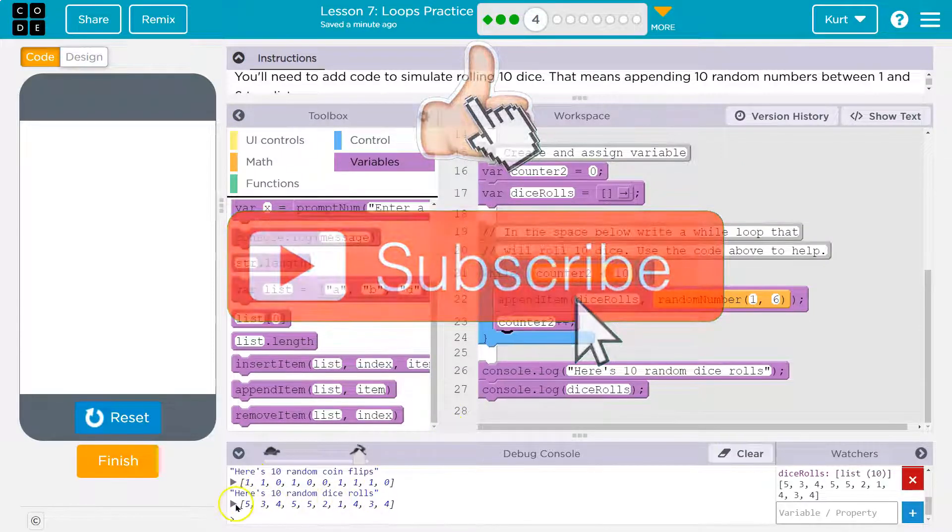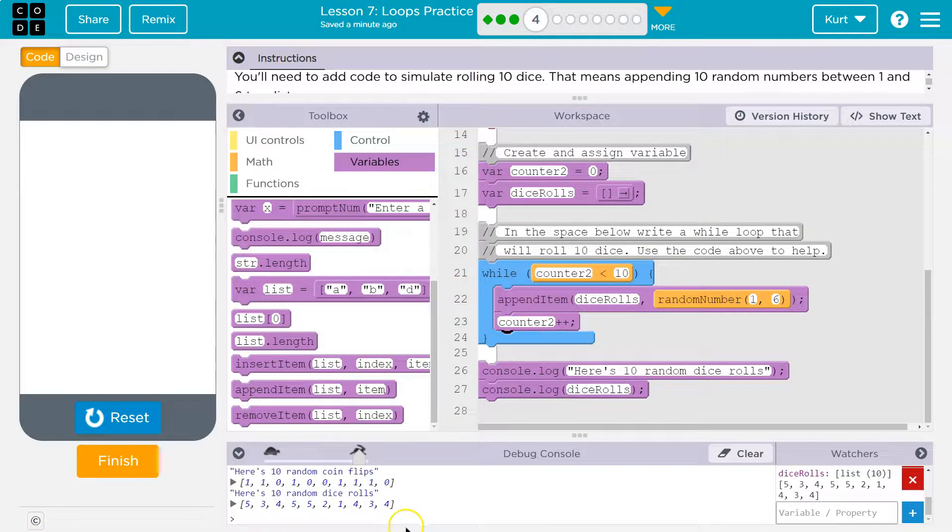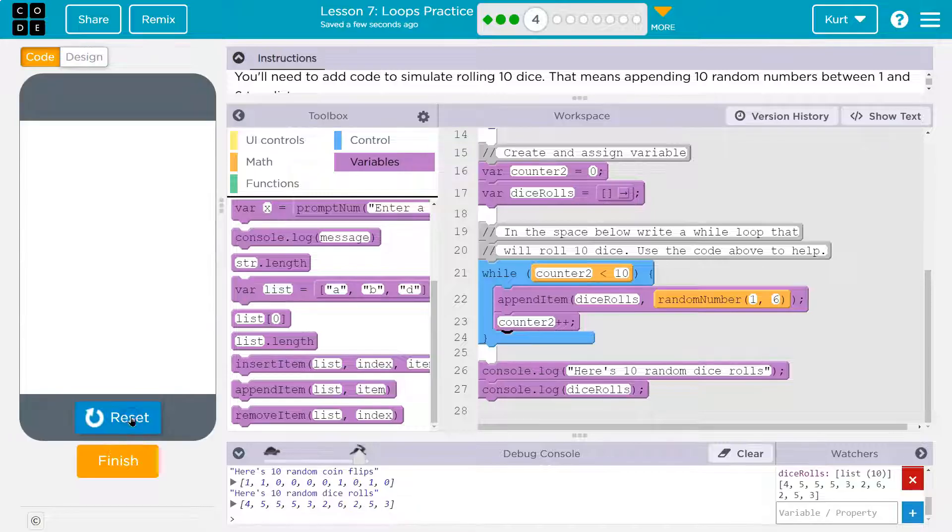Let's see what we get. I ran mine super fast, but there we are. 10 random dice rolls. And there we are again. Cool. Let's keep going.